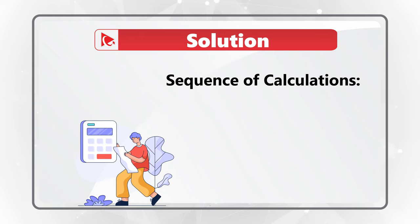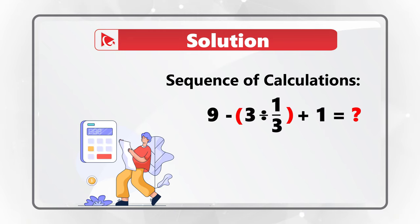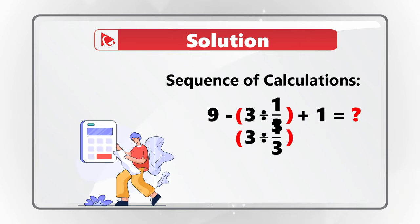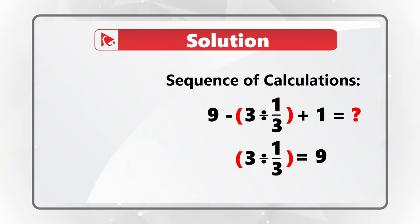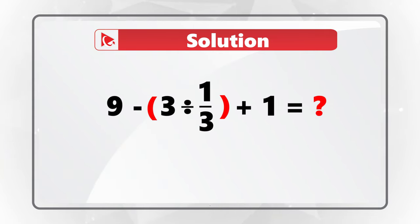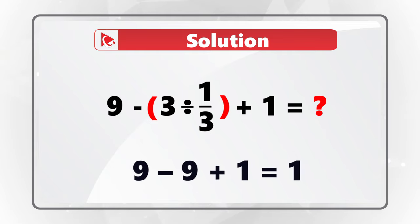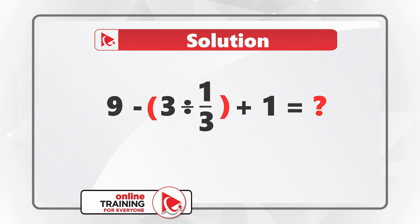If you look at the expression closely, you'll see that the first part to be calculated is the division. Dividing three by one-third — to emphasize this, it's placed in red parentheses. Three divided by one-third equals nine. Then you do sequential subtraction and addition: nine minus nine equals zero, plus one equals one. This is why the correct choice is choice A, 1.